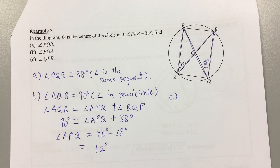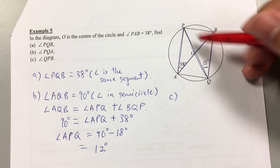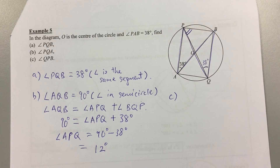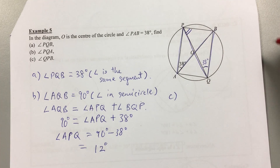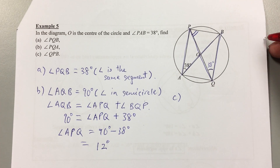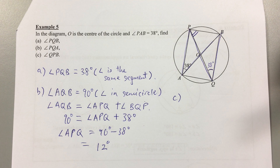Let's speed up the process. Part C asks for angle QPB. Don't restrict yourself to just one piece of information — try to look at the whole picture. Let's think about the properties we've learned: angle at center is two times angle at circumference, and the angle in a semicircle.